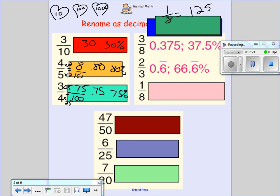1 eighth, this one's written, is done pretty easily because 1 eighth equals 0.125, which would be 12 and a half percent.